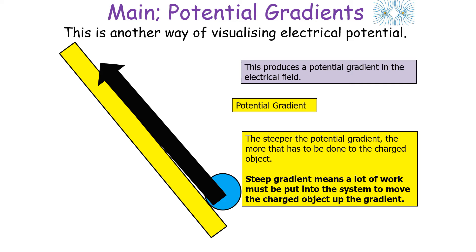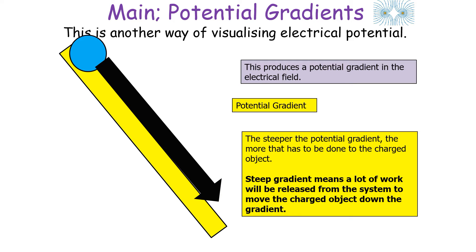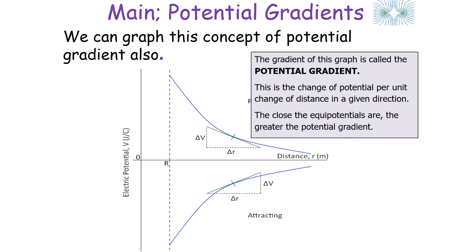The steeper the potential gradient, the more work that has to be done to move that charged object. A steeper gradient means a lot more work has to be put into the system to move the charged object up the gradient. This is also the same when going down — a steep gradient means a lot of work will be released from the system to move the charged object down the gradient.